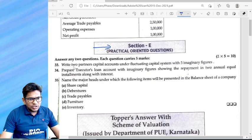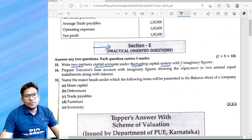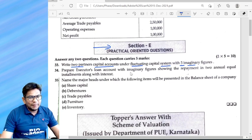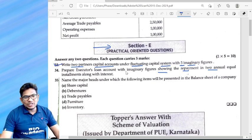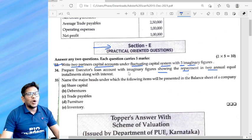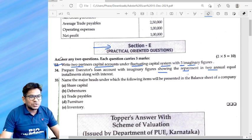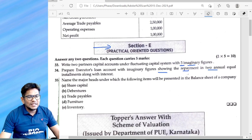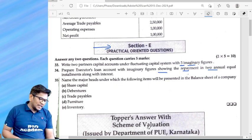Here is the question. Section E: Write partners capital account under fluctuating capital system with five imaginary figures. Prepare executor account with imaginary figures showing the repayment in two equal installments. My dear students, today we will finish these two problems back to back. First question, write partners capital account under fluctuating capital with five imaginary figures.